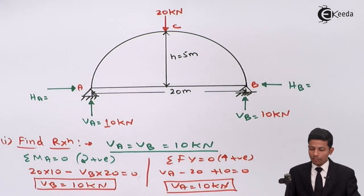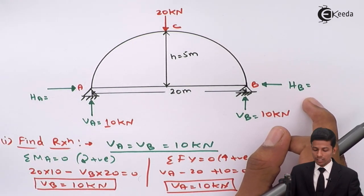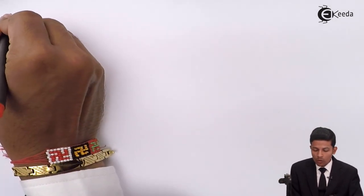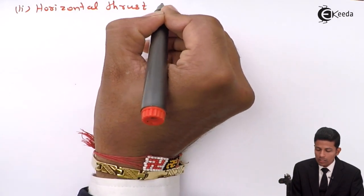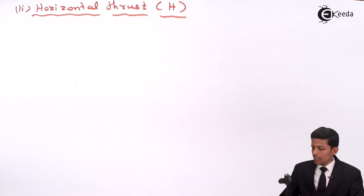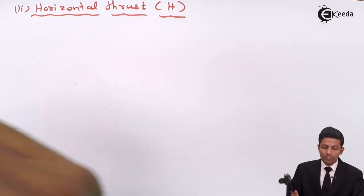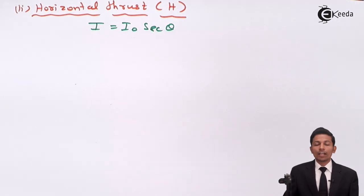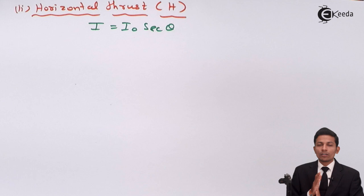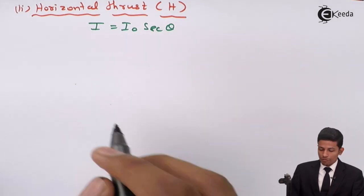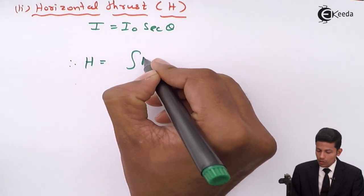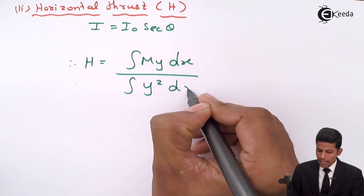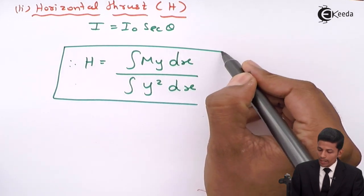In this chapter, remember this very important step. We use the formula I equals I₀ sec θ. For 2-hinged parabolic arches, to find H, we do not take the bending moment at C directly as in a 3-hinged arch. Instead, we apply the integration formula: H equals integration of M·Y·dX divided by integration of Y²·dX.